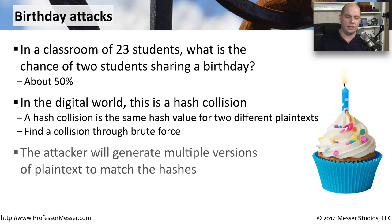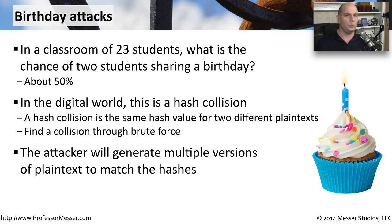Attackers can use hash collisions to create multiple versions of plain text. If they can slightly modify some plain text and produce the same hash, they might be able to change a document being sent across the network — and the digital signature of that hash still matches what was sent, even though the content was altered. This can also be used beyond digital signatures, such as for certificates used to encrypt data on a web server. You might think you're going to a trusted web server, but the bad guys have found a collision hash that lets them build a certificate that looks legitimate but is really owned by them.